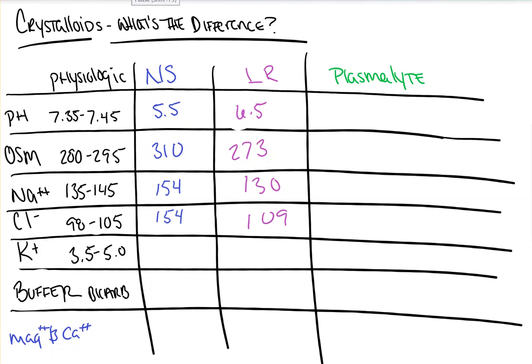Now, LR has potassium in it, about 4 milliequivalents. For reference, when we're giving a patient potassium for electrolyte disturbances for repletion in hypokalemia, we're giving 20 or 40 milliequivalents in order to raise the potassium by 0.2 or 0.4, where every 10 milliequivalents raises the potassium by 0.1.